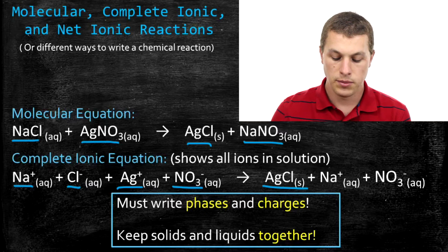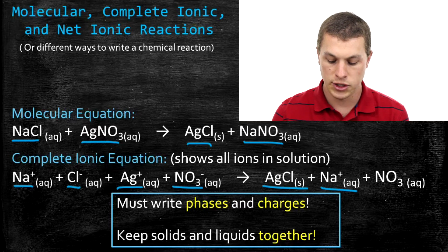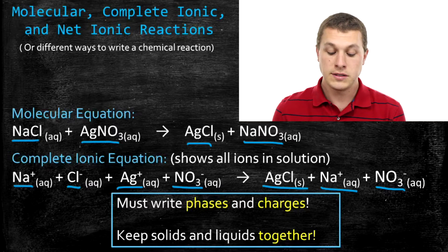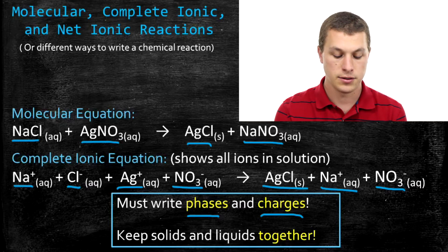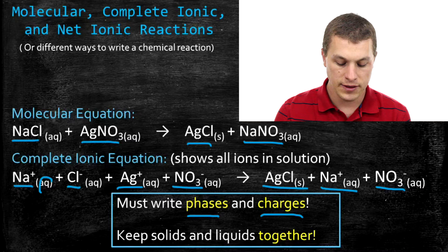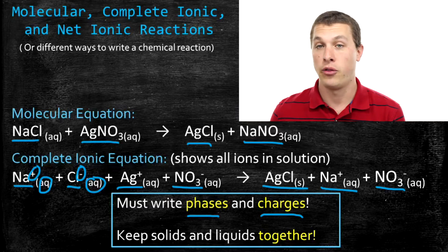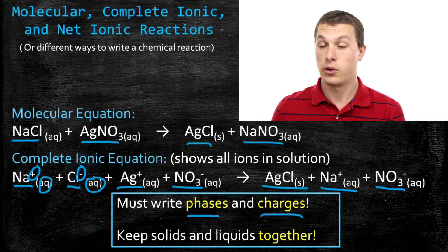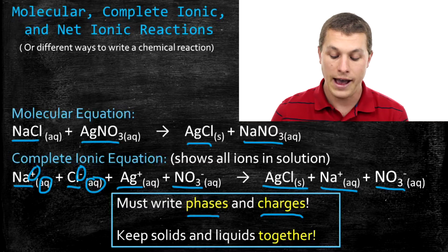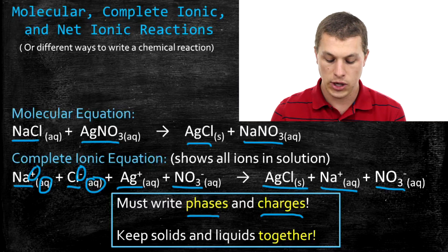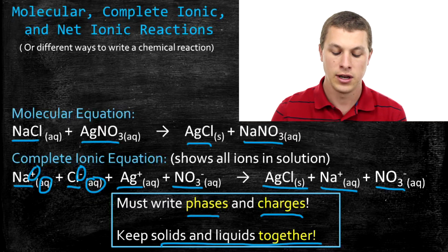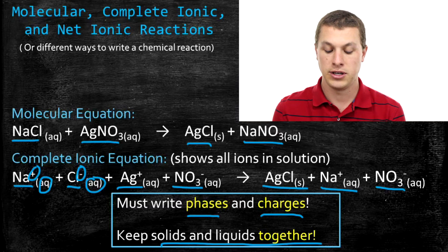Sodium nitrate does split apart, and it splits into sodium⁺ and nitrate⁻. A few notes here: you must always write your phases and your charges when writing your complete ionic reaction. It's very important to write aqueous and the positive or negative charges, because that's actually how they're floating around in solution — separately and charged. The second thing to note is that you have to keep solids and liquids together. So if you have a solid or liquid, you don't split it apart when writing the complete ionic equation.